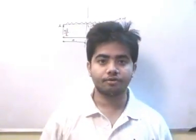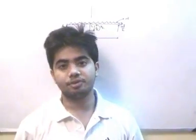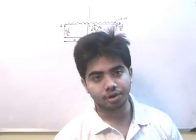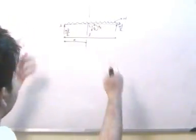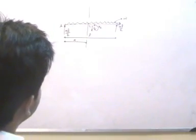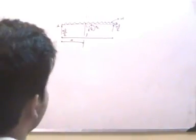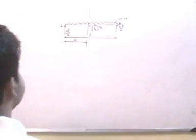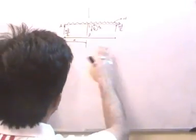In this lecture, we'll understand the shape of the shear force diagram and bending moment diagram for a uniformly distributed loading system. For example, if this is beam AB with a uniformly distributed load of intensity W, the reactions are WL/2 and WL/2.